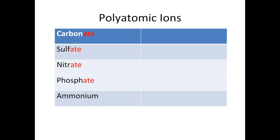Some polyatomic ions now. So polyatomic just means many atoms in the ion. So the carbonate ion is CO3, overall charge 2-. Sulfate SO4, 2-. Nitrate NO3, 1-. Phosphate PO4, 3-. And the ammonium ion is NH4, 1+.